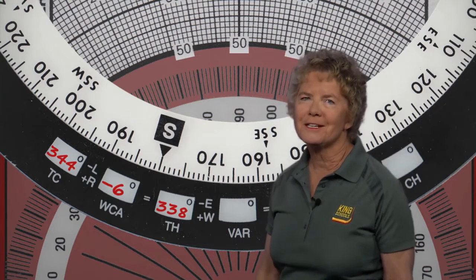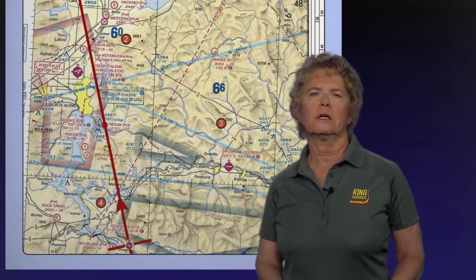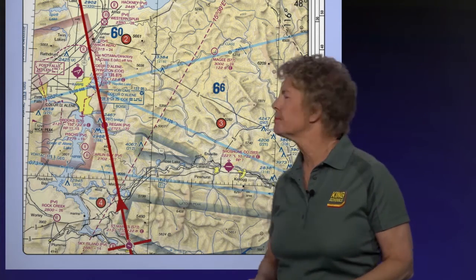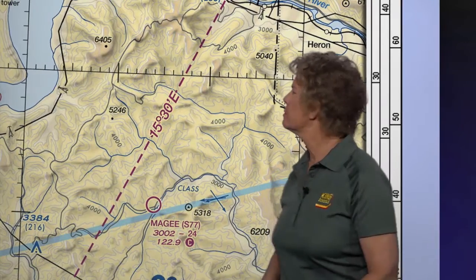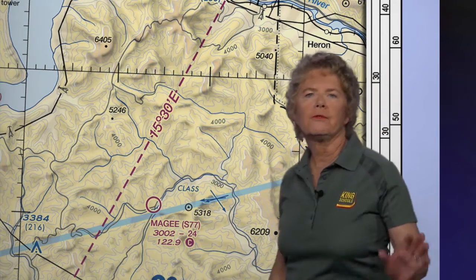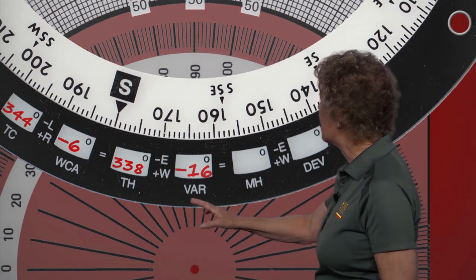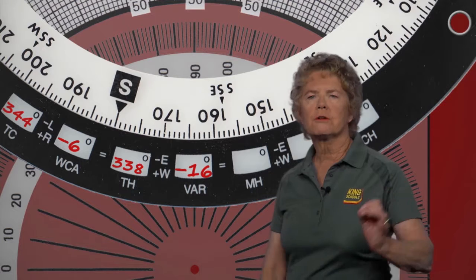To find magnetic variation, we take a look back on the chart for a magenta dashed isogonic line that crosses or is close to our course. Following that dashed line up to the right, a little to the southeast of the lake, we find the magnetic variation: 15 degrees 30 minutes east, which I'd round to 16 degrees of easterly variation. Because it's east — east is least — we're going to subtract it. So we enter minus 16 degrees in the box for variation.